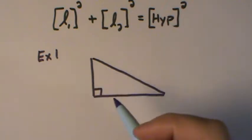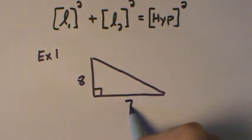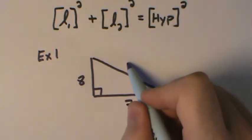In this example, let's say the legs are 8 and 7. To figure out the hypotenuse, we'll call that X.